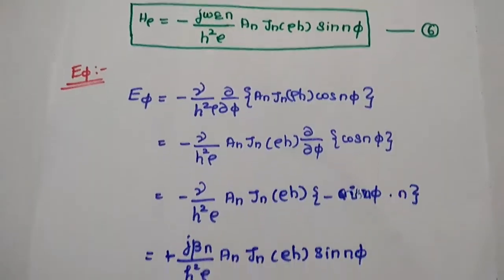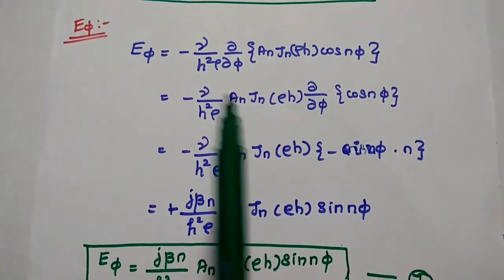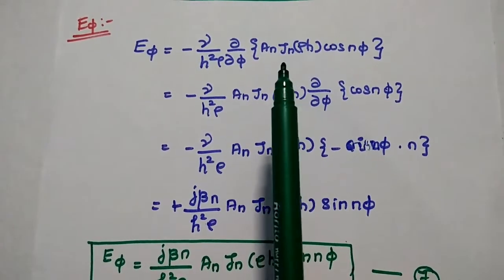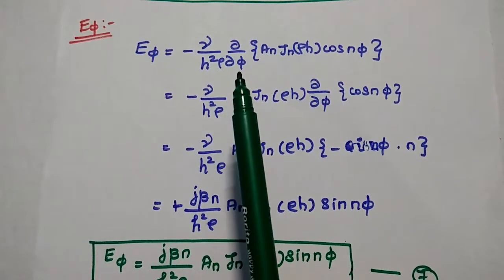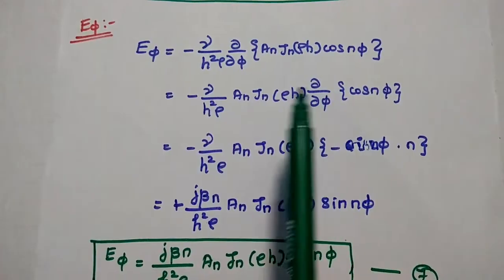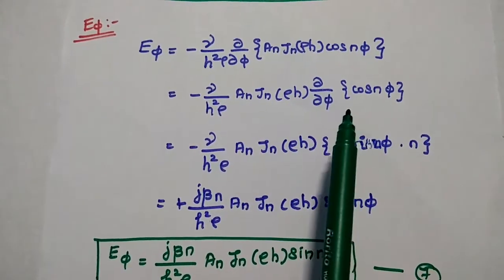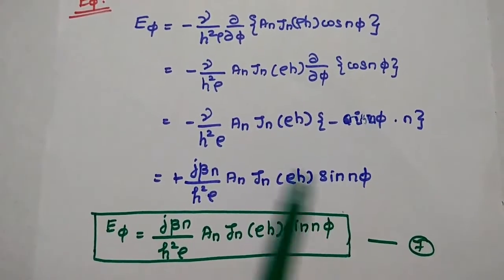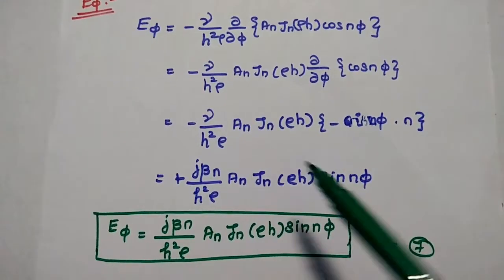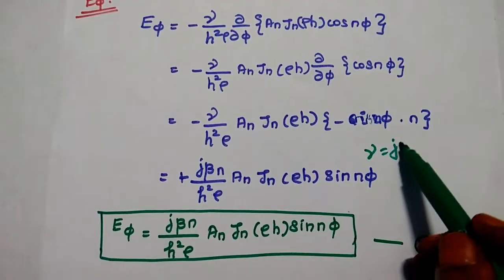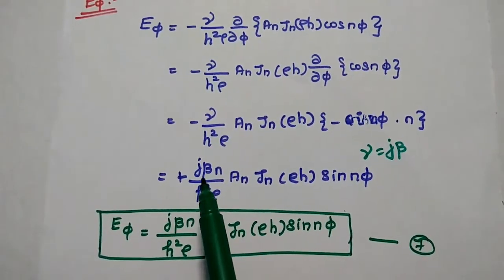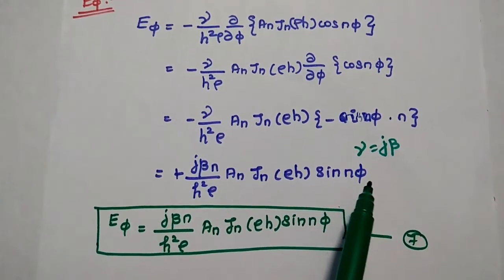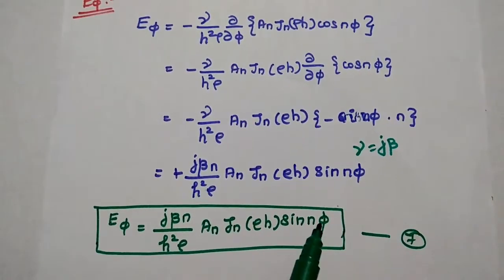Next we find E phi. E phi is equal to minus gamma by H square, dou by rho dou phi of EZ, which is AN JN of rho H cos N phi. We differentiate with respect to phi, taking AN JN of rho H outside. Differentiation of cos N phi gives minus sin N phi into N. This gives minus into minus equals plus. Since gamma equals J beta, the result is J beta N by H square rho, AN JN of rho H sin N phi.